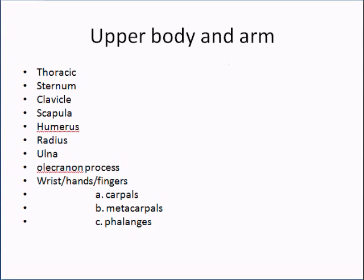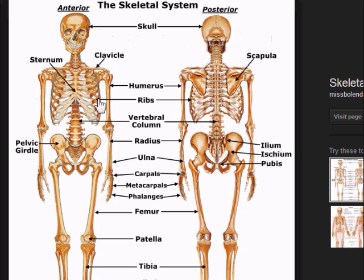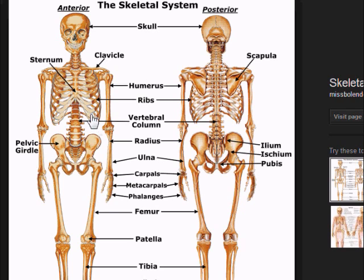For the upper body: the thoracic cage is composed of 24 individual ribs — 12 on each side. The first seven are true ribs because they connect all the way from the vertebrae to the sternum. The next three don't connect directly to the sternum — they connect to the seventh rib. The last two are floating ribs; they don't attach at the front at all.